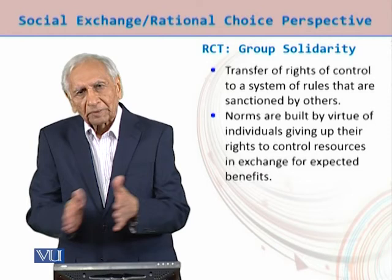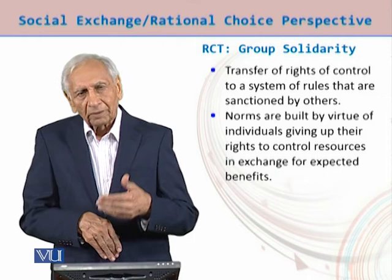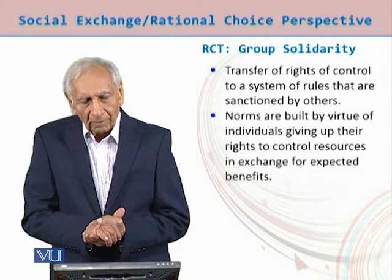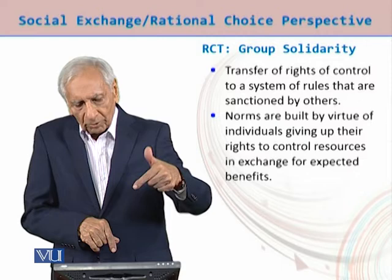This system of rules — particularly when we move from norms to rules — in most cases these rules are formal in kind, possibly written, with authorities responsible for their execution. Those who violate them may be sanctioned against. Norms are built by virtue of individuals giving up their rights to control resources in exchange for expected benefits — that right to control, which is the authority to give up.